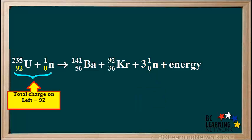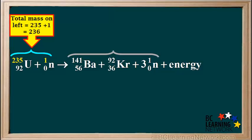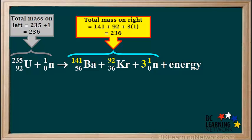We'll check for conservation of charge. We see that the total charge on the left is 92 plus 0, which equals 92. And we can calculate the total charge on the right as 56 plus 36 plus 3 times 0, which adds up to 92, so charge is balanced. We can also check for conservation of mass. The total mass on the left is 235 plus 1, which equals 236. And the total mass on the right is 141 plus 92 plus 3 times 1, which is also equal to 236. So mass is conserved.